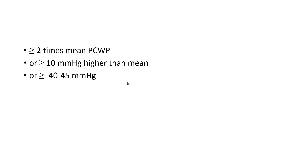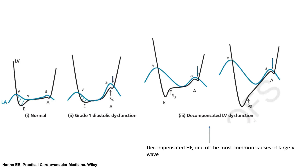V-wave equals left atrial compliance being overwhelmed. Decompensated heart failure is the most common cause of a large V-wave. Ventricular septal defect or rupture can also cause a very large V-wave. Mitral stenosis can cause V-waves, particularly in late stages once the left atrium is very fibrotic and non-compliant. In MS, you get pronounced A-wave early and pronounced V-wave in late stages.